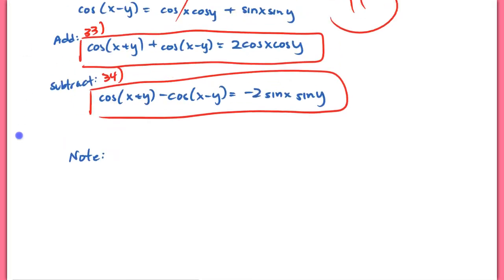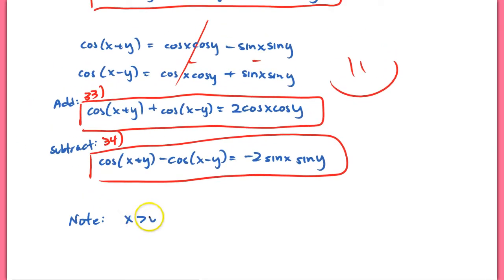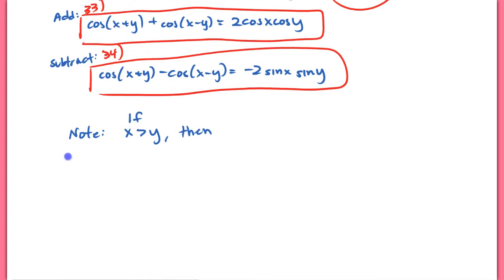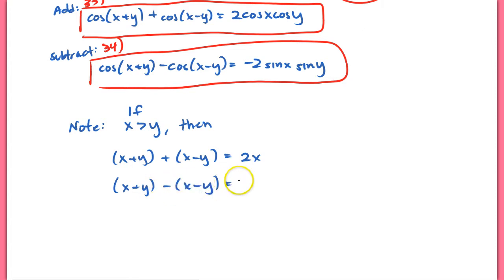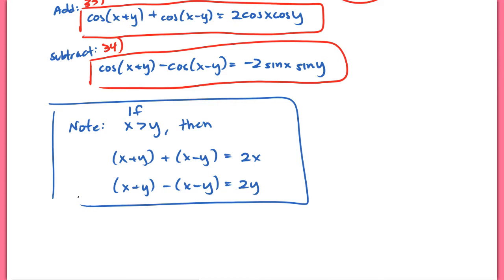These formulas are all under the condition that x is greater than y. If x > y, then (x+y) + (x−y) = 2x, and (x+y) − (x−y) = 2y. These conditions are very useful when we try to go from a sum to a product, and our sum is already given with x+y and x−y put together.